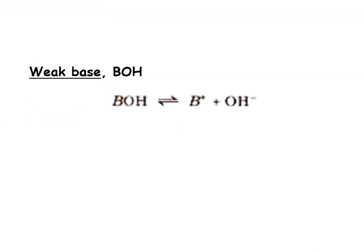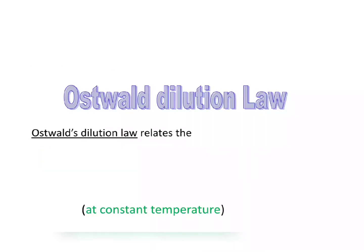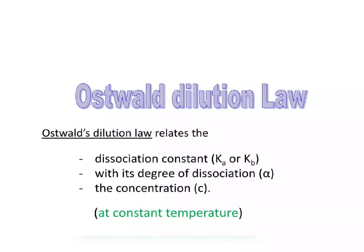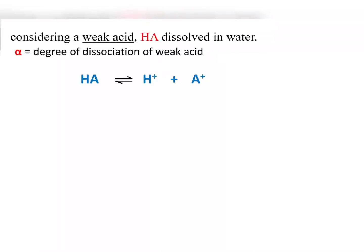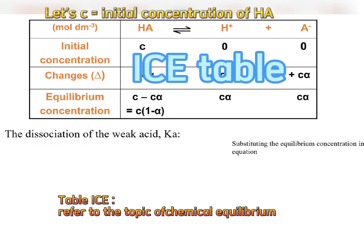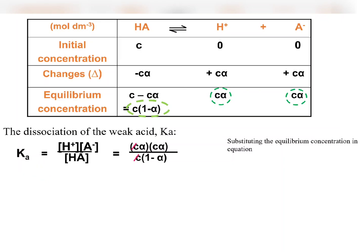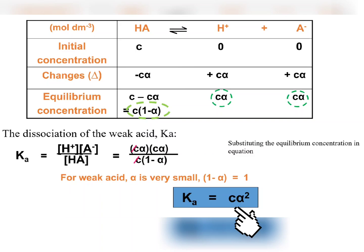Similarly, for the dissociation of a weak base, we have the equation for the base dissociation constant, Kb. In this video, we will discuss Ostwald's dilution law and its applications to weak electrolytes like weak acids and weak bases. This law is not applicable to strong electrolytes since their dissociation reaction is irreversible. Let's take the example of weak acid dissociation to derive the dilution law, starting with the equation for the acid dissociation constant. By using the ICE table, we can substitute the equilibrium concentrations into the Ka equation. Lastly, we arrive at Ka = Cα².